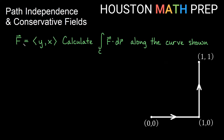Let's look at an example. I have a field (y, x). We want to calculate the work along the curve shown — going from (0,0) to (1,0) and then from (1,0) to (1,1). Doing this the long way, you'd parameterize each piece as a separate integral, finding m's, n's, dx, and dy for each. Instead, any time we're doing a line integral with vector fields, we should always first check: is this a gradient field? Do I have shortcut options?